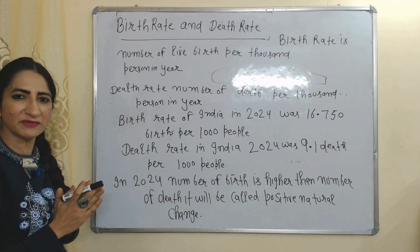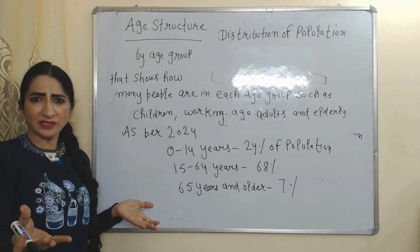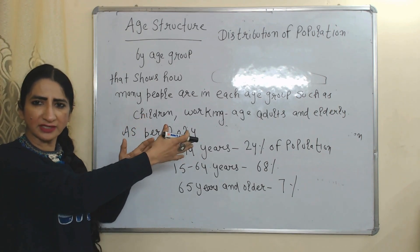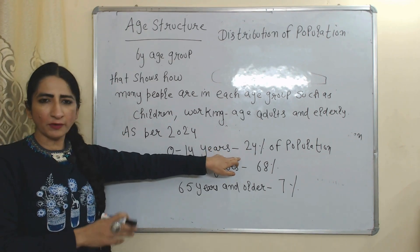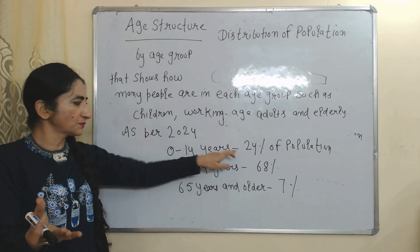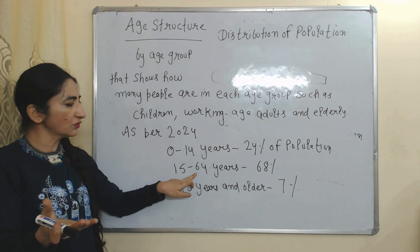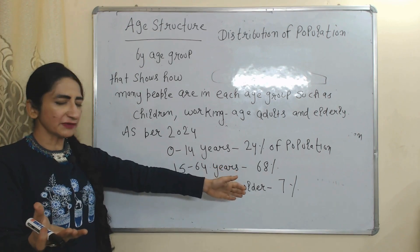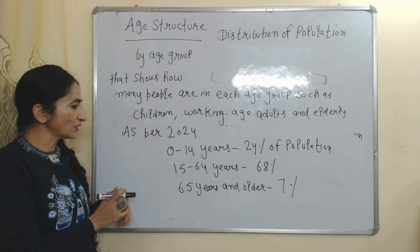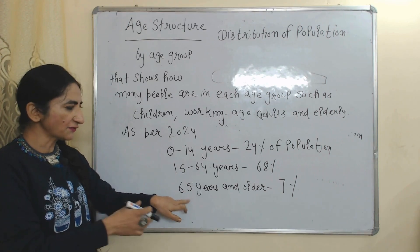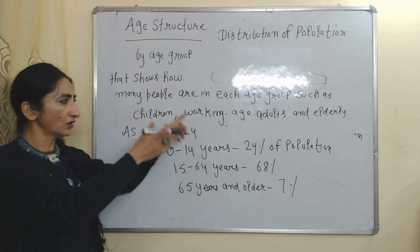The next feature is age structure, which means the distribution of population by different age groups such as children, working-age adults, and elderly people. As of 2024, 24% of India's population was between 0 to 14 years, 68% was between 15 to 64 years, and 7% was 65 years and older. The 0 to 14 and 65-and-older groups are dependent population, while 15 to 64 is the working age group.